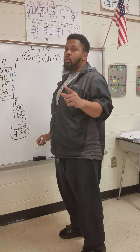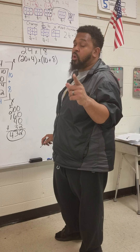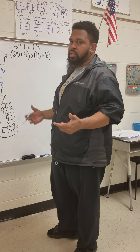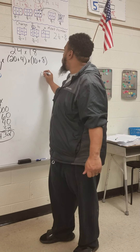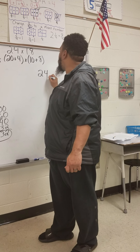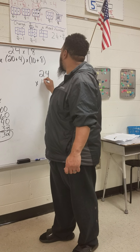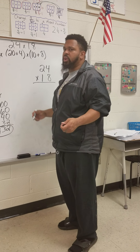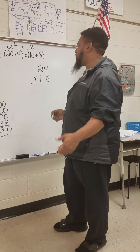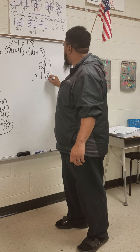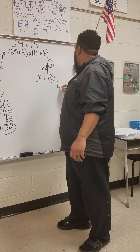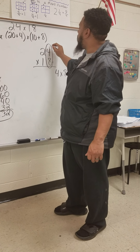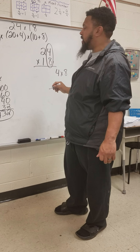And there's one more method I want to show you — partial product method. You're going to see that we get the same answer regardless. First, we line these numbers up: 24 times 18. With this method, we don't have to decompose in the same way. First, we circle the ones place digits and we have 4 times 8, starting in the ones place and multiplying by the ones place.